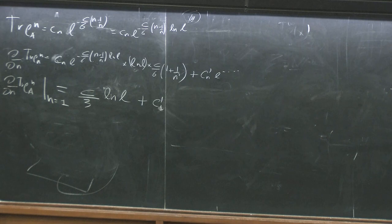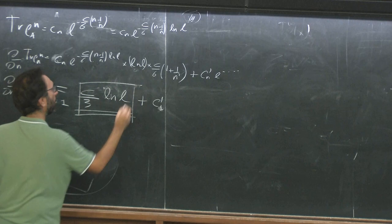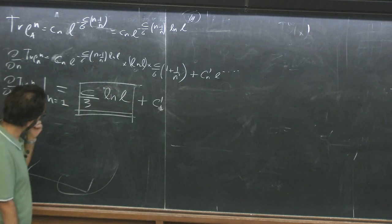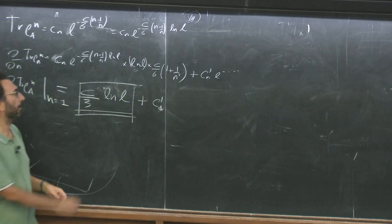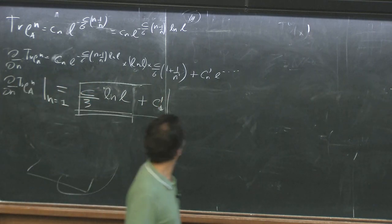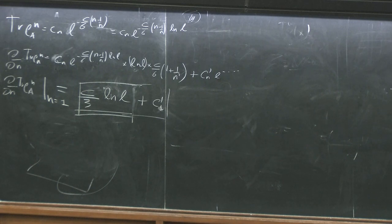So the final result is that for large L the entanglement entropy behaves like S = c/3 × log(L). This is a result I anticipated in the very first lecture. Plus a constant, but for large L the constant is smaller than the logarithm.